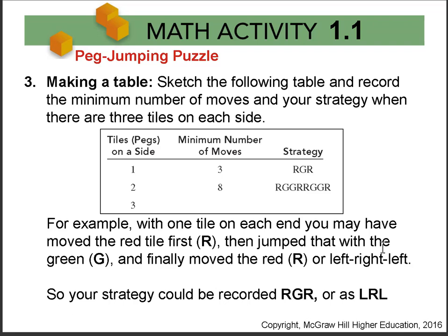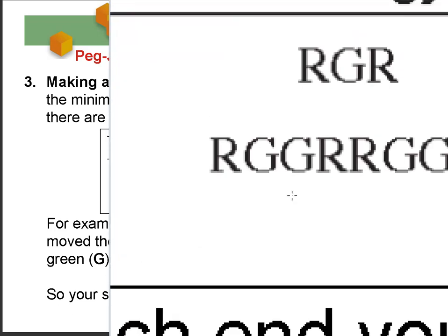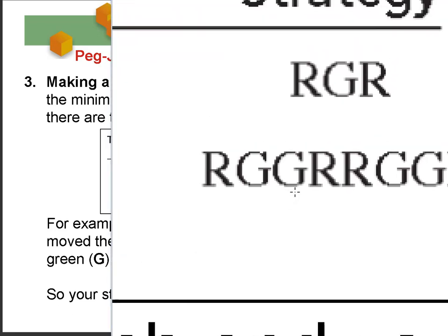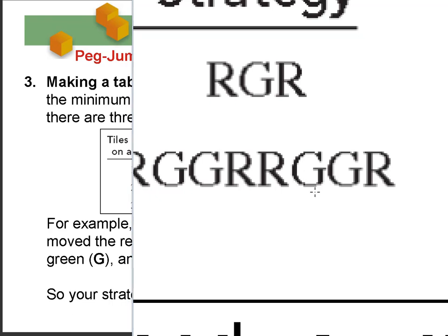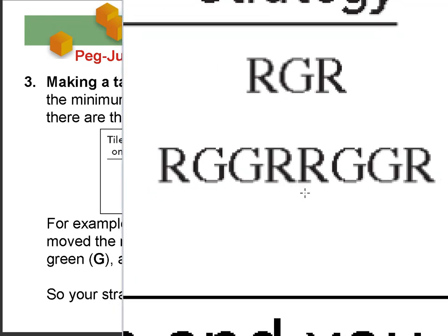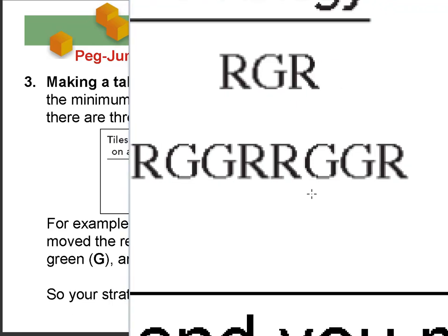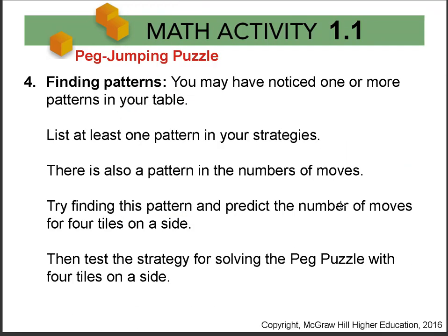You can see it already tells you that it's eight moves to move two tiles. The question for you is: what happens when you put three tiles on each side? What pattern can you see, and how do those moves work? You should look at this set here as well — red, green, green, red, red, green, green, red — or think of it as left, right, right, left, left, right, right, left. Hopefully you will have noticed some patterns in your table.